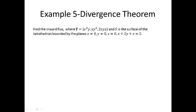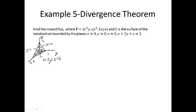Example 5 asks us to find the inward flux where S is the surface of the tetrahedron bounded by the planes x = 0, y = 0, z = 0, and x + 2y + z = 2. That plane intersects the x-axis at 2, the z-axis at 2, and the y-axis at 1. My surface is actually made up of four separate pieces: the front face is part of x + 2y + z = 2, the back is x = 0, the left side is y = 0, and the bottom is z = 0. If calculated directly, that would comprise four separate surface integrals.